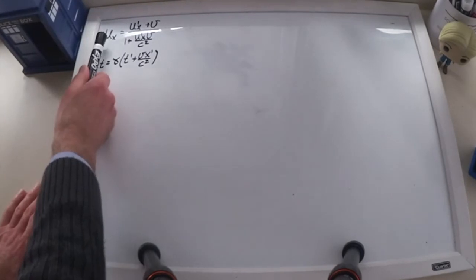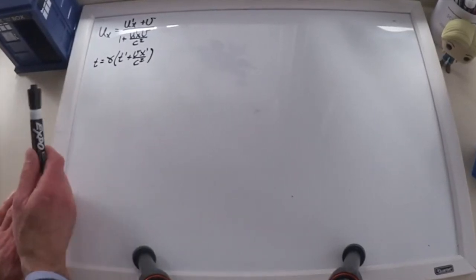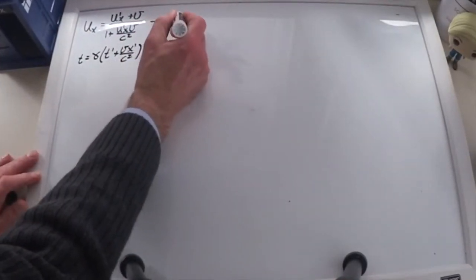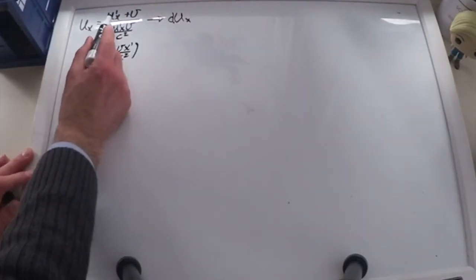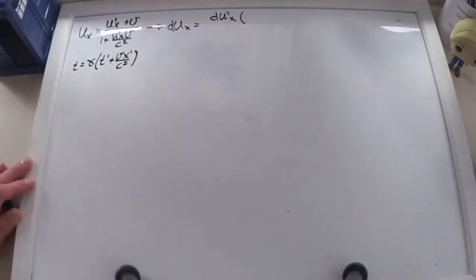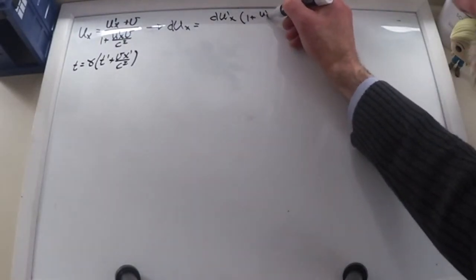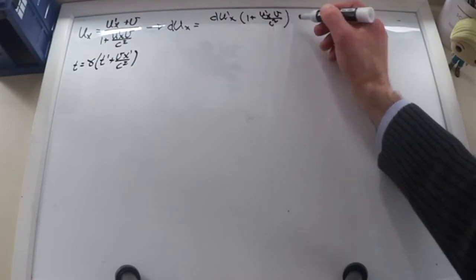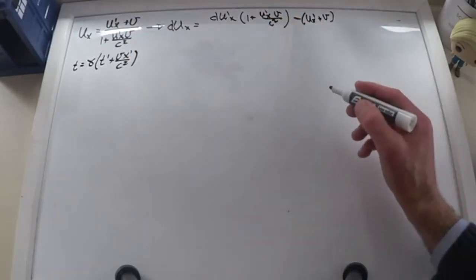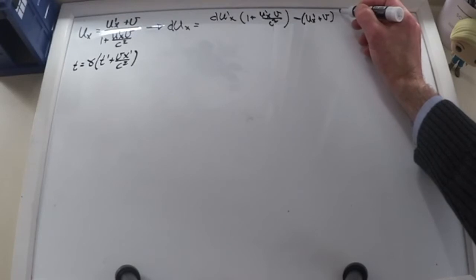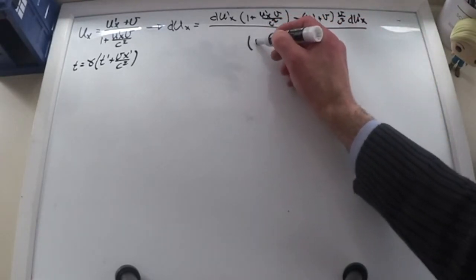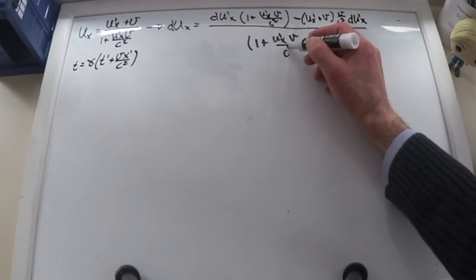Now what I'm looking for is du over dt, which is going to be the acceleration. In order to do that, I need to differentiate the velocity and differentiate the time. To differentiate the velocity dux, it will be the differential of what I have in the numerator, which is going to be du prime x multiplied by whatever I have in the denominator — which is 1 plus u prime x v over c squared — minus whatever I have upstairs, which is ux prime plus v, multiplied by the differential of what I have downstairs, which is going to be v over c squared du prime x, everything divided by the denominator squared: 1 plus u prime x v over c squared.